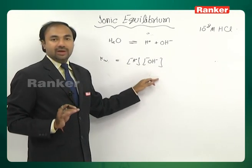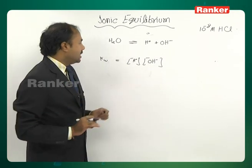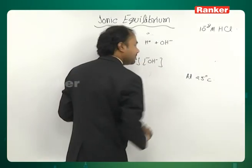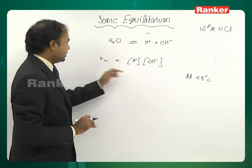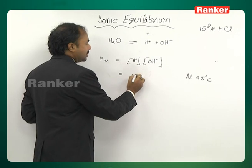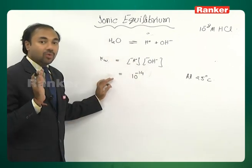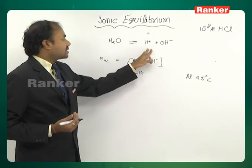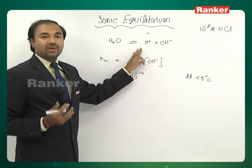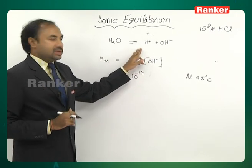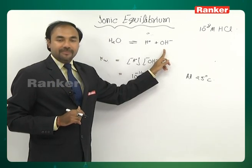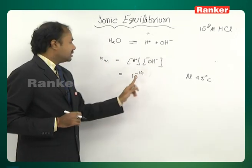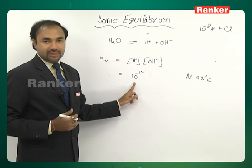Whatever type of solution we have — acidic, basic, or neutral — this equation for Kw is always valid. At 25°C, Kw equals 10⁻¹⁴. As you change the temperature, because the forward reaction is endothermic, increasing temperature shifts equilibrium forward, increasing ion concentrations and thus increasing Kw.